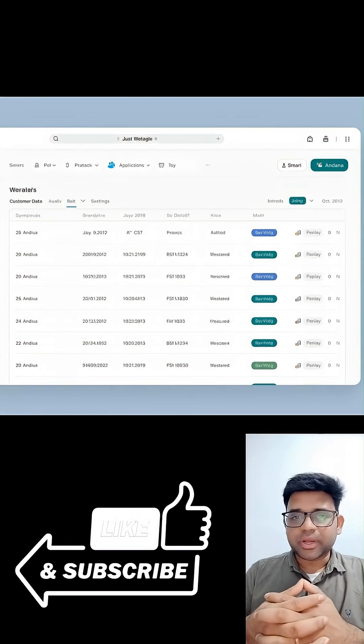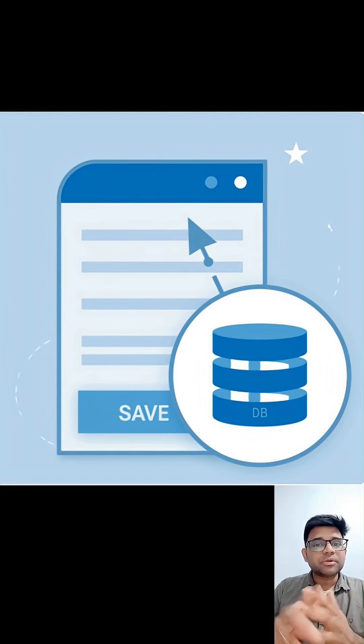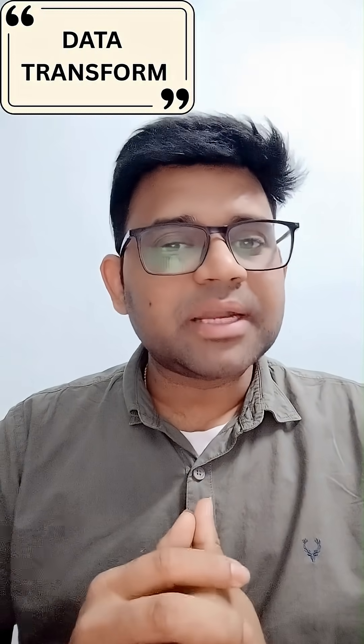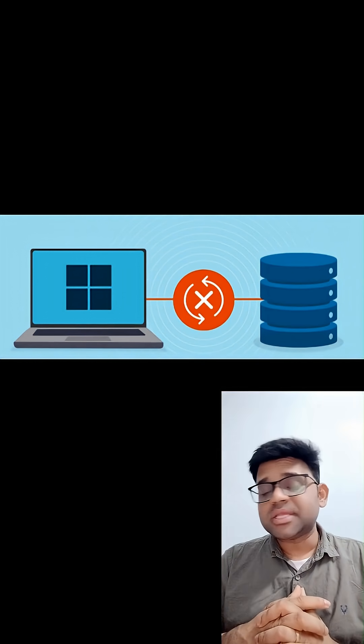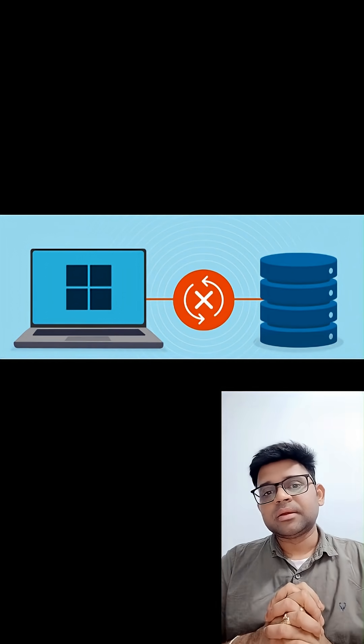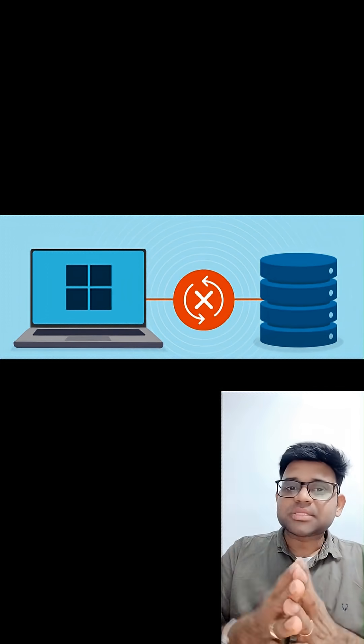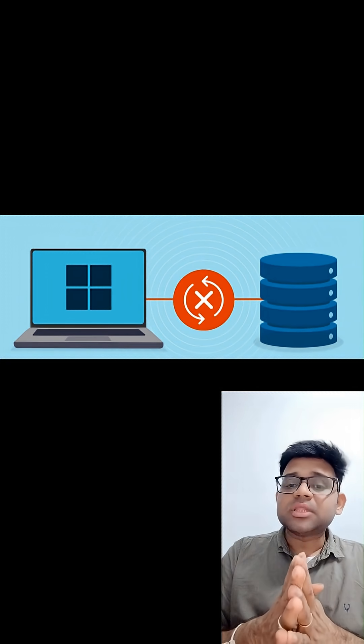Once you have the data on your UI, you try to update some fields and expect those changes to be saved back into the database system. You try updating the values using a data transform or an activity, and it looks like changes are happening temporarily, but the moment you refresh the screen all the changes are gone.